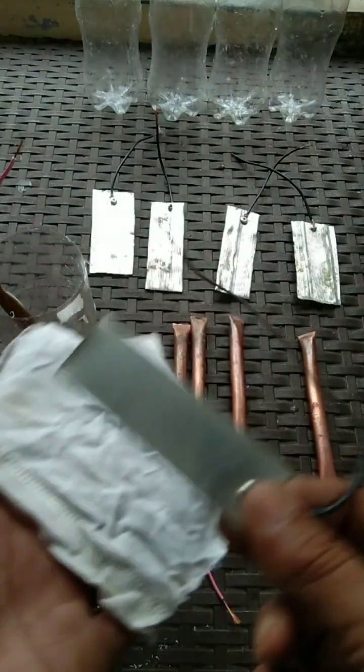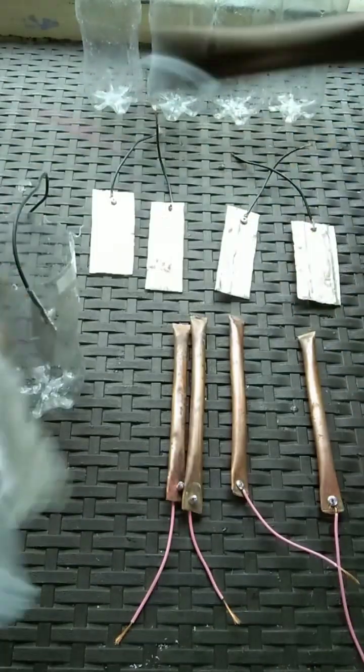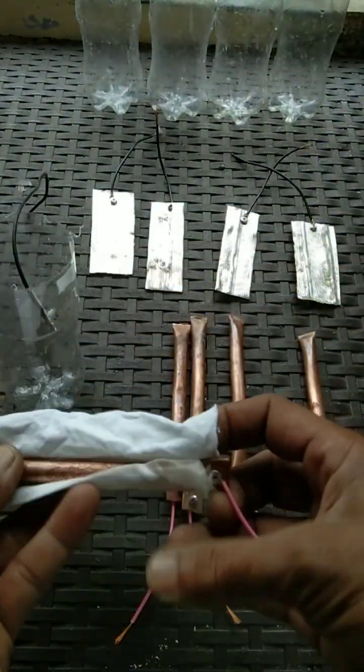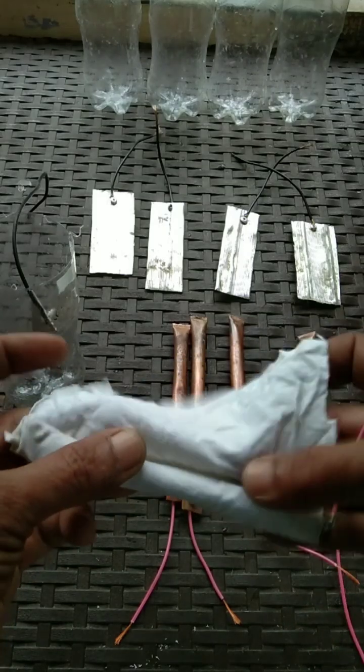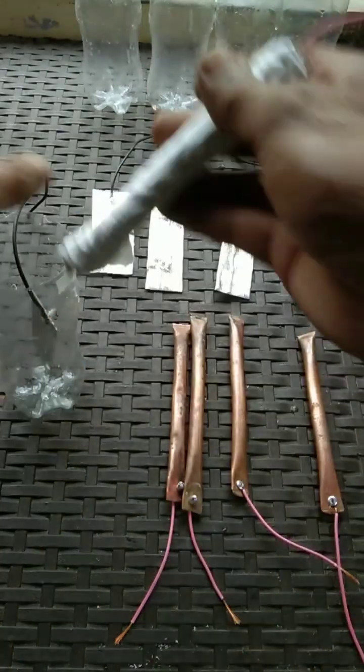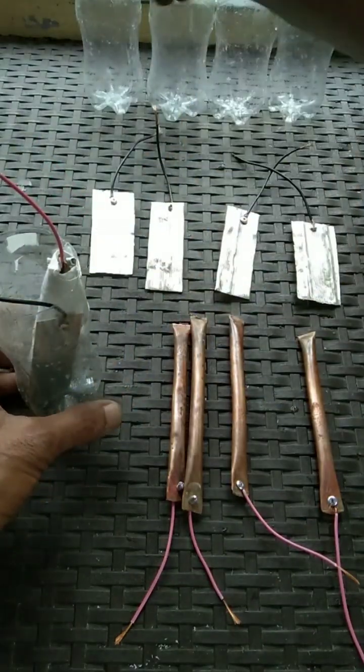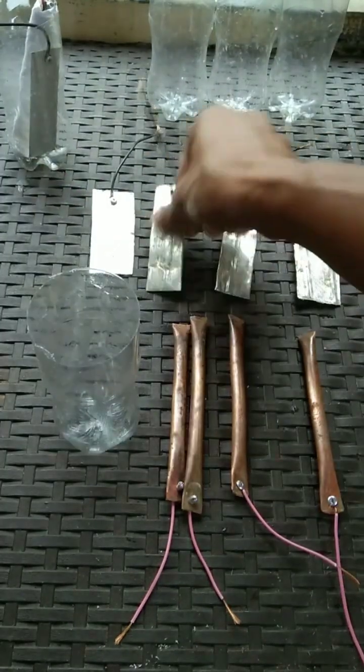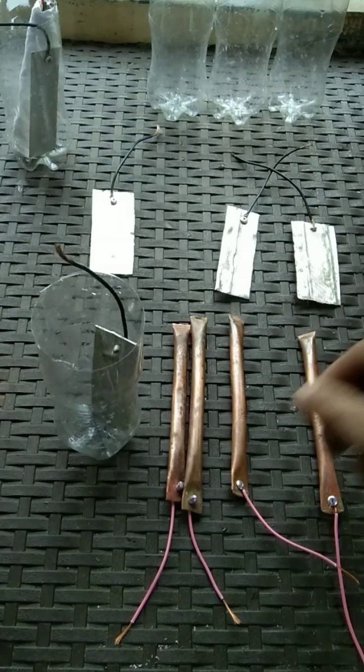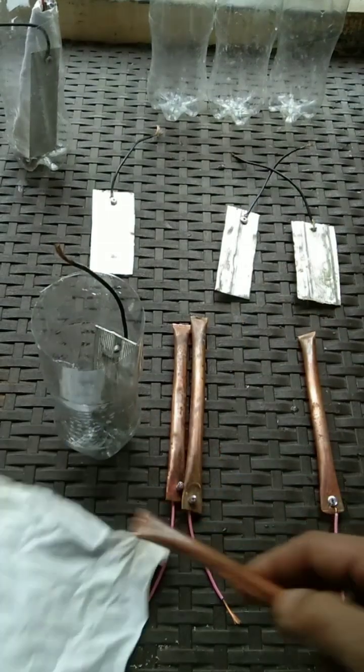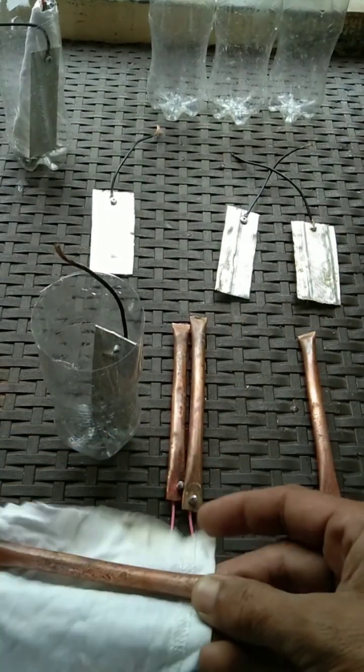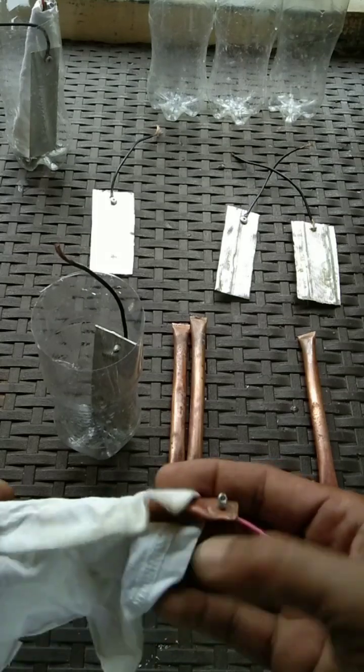This is a cotton cloth. All you need to do is wrap around the cloth to the copper tube in order to prevent touching each other between copper and aluminum. Do the same thing or do the same procedure to the rest of the cells.